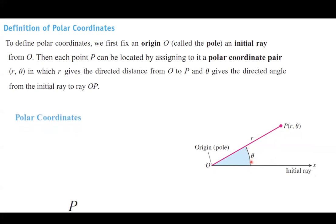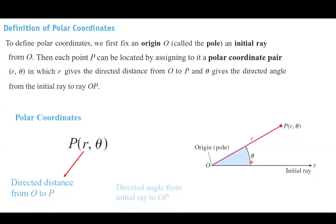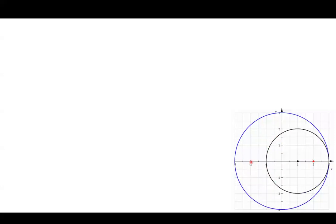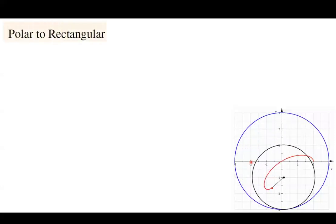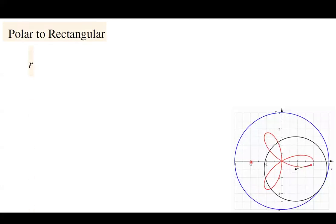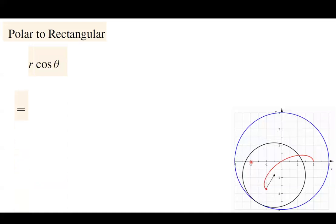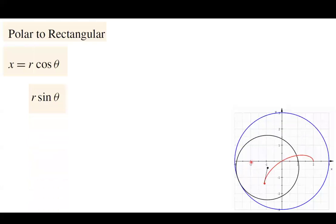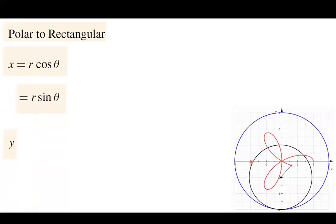So the polar coordinates are described as P of R and theta, where R is the directed distance from O to P, and theta is the directed angle from the initial ray to OP. From polar to rectangular coordinate system: R times cosine theta equals X, and R times sine theta equals Y.